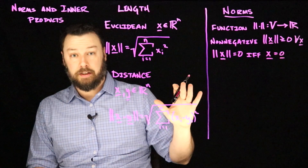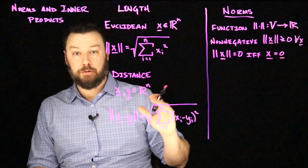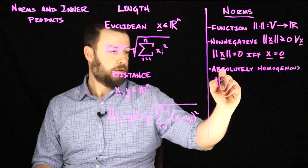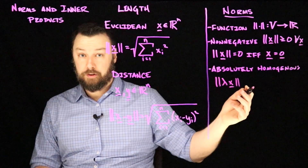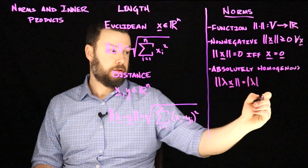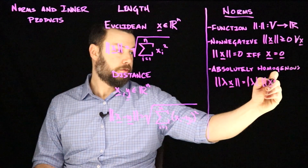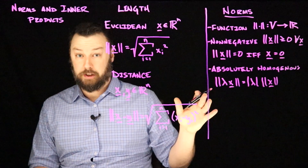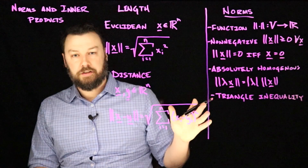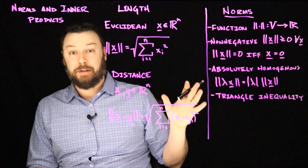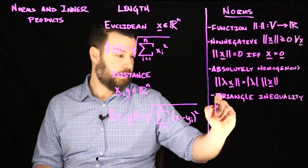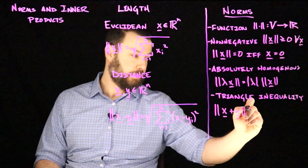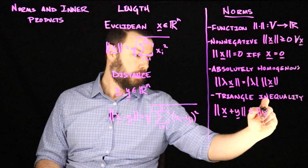We also require that scaling interact with distance in the expected way — we call this absolute homogeneity. If some scalar lambda scales a vector x, the length of that scaled vector must equal the absolute value of lambda multiplied by the norm of x. A norm must also satisfy the triangle inequality: if I have vectors x and y, the norm of their sum must always be less than or equal to the sum of the two norms taken separately.